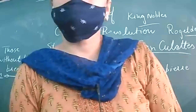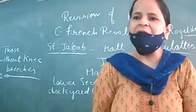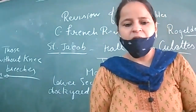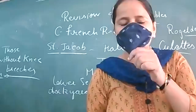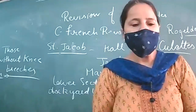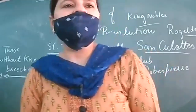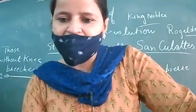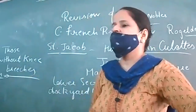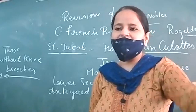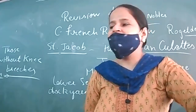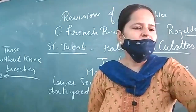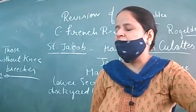The sans-culottes made a plan to attack the Palace of Tuileries — the king's palace. They arrested the king and his family. New elections were held in the country, and the Jacobin Party won with the maximum number of votes.